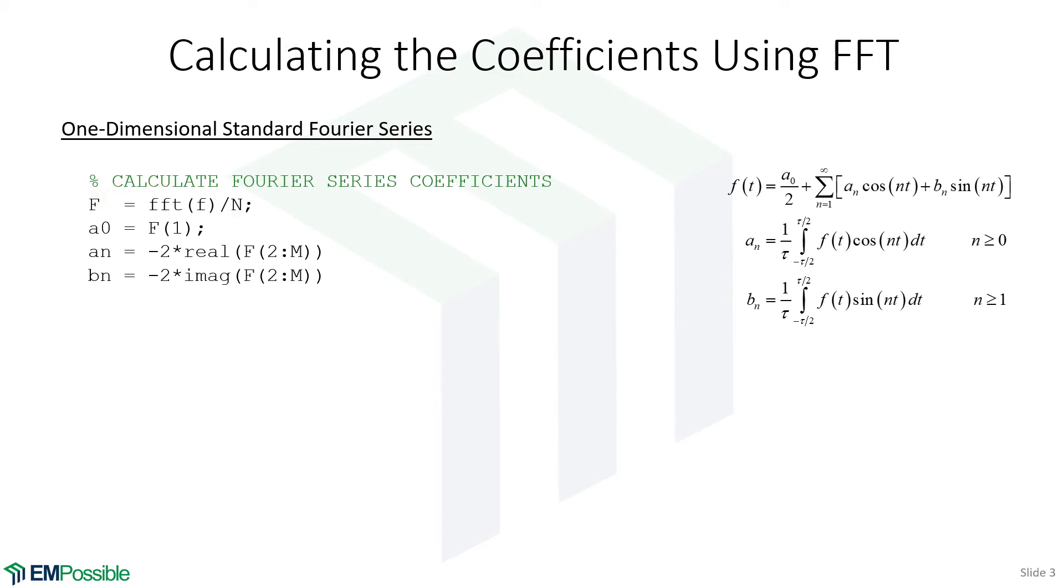Now we didn't call FFT shift. So the lower order frequency terms are off to the far sides of that array F. Well, the very first one in F is that A naught term. Remember, that's that DC term sitting out there.